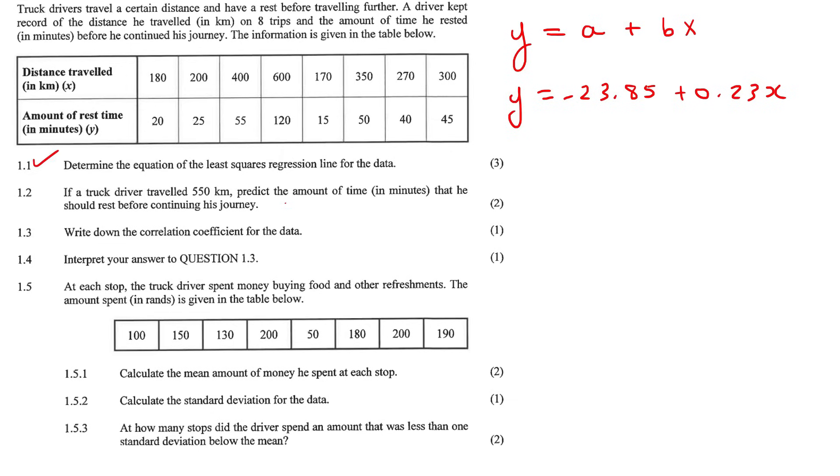1.2, if a truck driver travels 550 kilometers, so that's the X value, predict the time that he would rest. You just use your formula and these are the X values and they gave us the X value as 550. And if you do that, you should get 102.65 minutes.